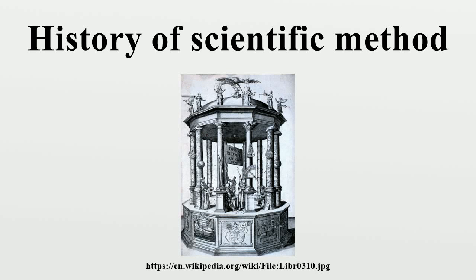The history of scientific method is a history of the methodology of scientific inquiry, as differentiated from a history of science in general. The development and elaboration of rules for scientific reasoning and investigation has not been straightforward. Scientific method has been the subject of intense and recurring debate throughout the history of science, and many eminent natural philosophers and scientists have argued for the primacy of one or another approach to establishing scientific knowledge.